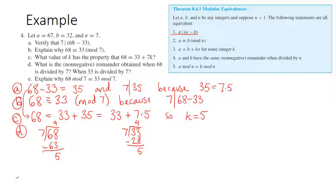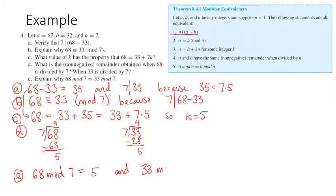For part e, 68 mod 7 is the positive remainder when dividing 68 by 7, which is 5. And 33 mod 7 is the positive remainder when dividing 33 by 7, which is also 5. That's why they are equal. We've confirmed that all five parts of the theorem are true when a is 67, b is 32, and n is 7.